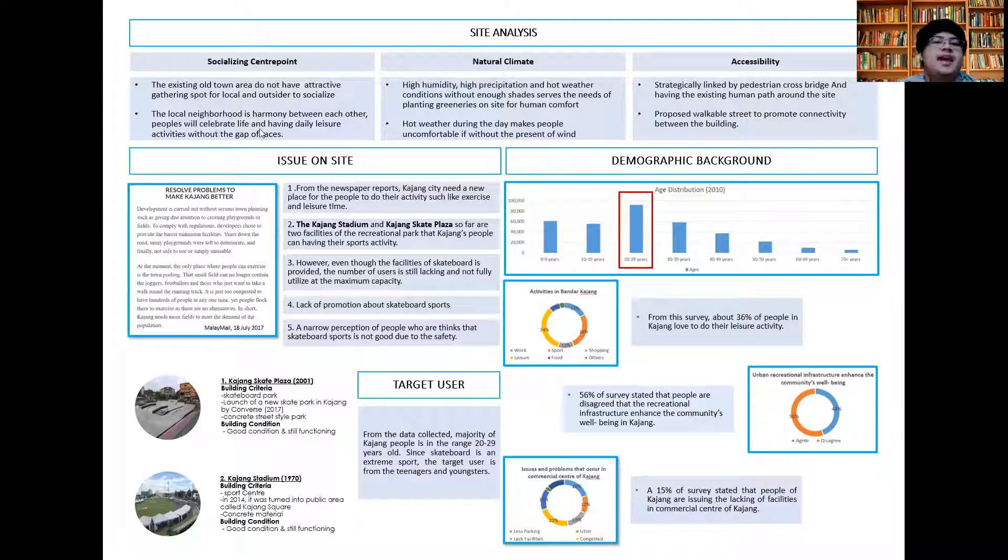People celebrate life and have daily leisure activities without the gap of races. For natural climate, high humidity, high precipitation, and hot weather conditions without enough shade create the need for planting on site for human comfort. Hot weather during the day makes people feel uncomfortable without the presence of wind.